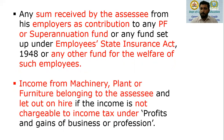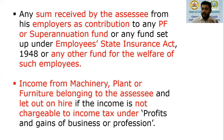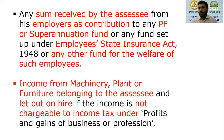Then, income from machinery, plant, or furniture belonging to the assessee and let out on hire, if the income is not chargeable to tax under business income. For example, a Shamiana business — they have their shamiana, chairs, furniture, fans, lights, and fittings. Any income they earn from such machinery, plant, or furniture, if not shown under the head business income, will be shown under the head income from other sources.